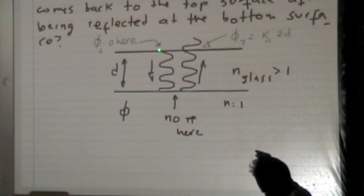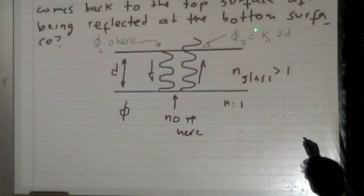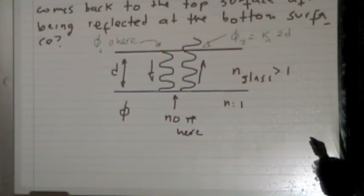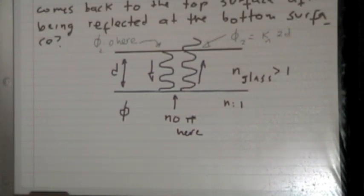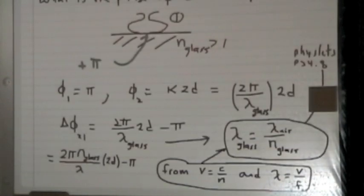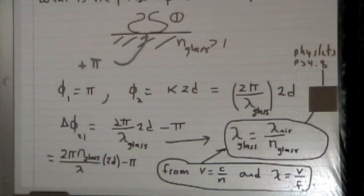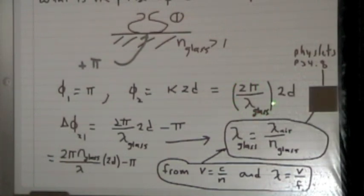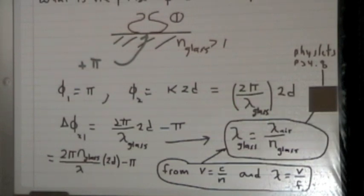The phase of wave two starts at zero here. When it comes back, its phase equals the wave number inside the glass — which is 2π over the wavelength inside the glass — times the distance traveled, 2d. Now, what's the phase of wave one? The incoming wave has phase zero. But the reflected wave one acquires a phase of π due to the reflection at the top surface going from low to high index. So phase of wave one is π, and phase of wave two is (2π/λ_glass) × 2d.